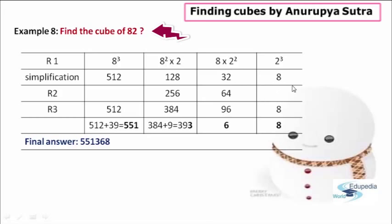Now finally moving to the fourth part — here what I have done is I have cubed the digit in the ones place. In our example, we have 2 in the ones place. So by cubing the number 2, we get 8 as the answer, and that 8 I have written in the next row called simplification.